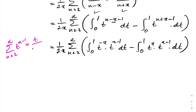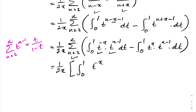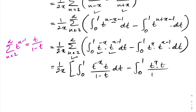We know that the sum from n=2 to infinity of t^(n−1) equals t/(1 minus t) when the absolute value of t is less than 1. So substituting, instead of the infinite sum we have t/(1 minus t). This gives us the integral from 0 to 1 of t^(−x) times t/(1 minus t) dt, minus the integral from 0 to 1 of t^x times t/(1 minus t) dt.